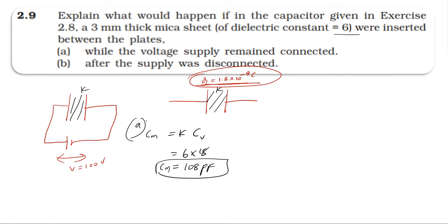Charge: battery connected, potential remains 100 V. Q equals C in medium times V, equals 108×10^-12×100 = 108×10^-10 coulomb.